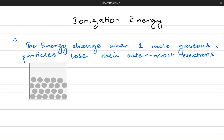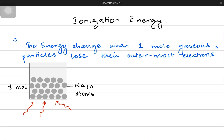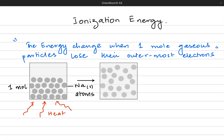Imagine I have one mole of solid sodium sample. It is solid in nature — that is why I'm writing the state symbol as S. These are one mole, so for sodium it is 23 grams of sodium. If I give it heat, the particles are going to absorb the heat, they're going to overcome the electrostatic attraction of the metallic lattice, and they're going to become liquid — that is the melting of sodium.